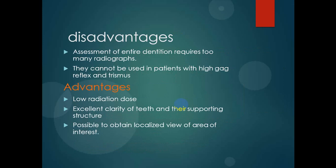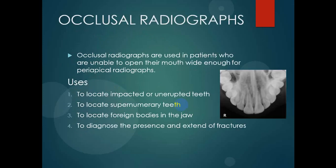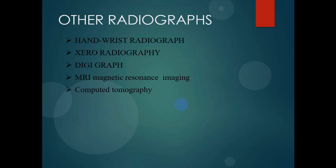Periapical radiographs cannot be used in patients with high gag reflex and trismus. Advantages include low radiation dose, excellent clarity of teeth and their supporting structures, and it is possible to obtain a localized view of the area of interest. For generalized assessment of the entire dentition, multiple periapical radiographs are needed. Other intra-oral radiographs include bitewing radiographs and occlusal radiographs. Extra-oral radiographs include panoramic radiograph and cephalometric radiograph. Other radiographs used include hand-wrist radiograph, zero radiograph, digit radiograph, MRI, and computer tomography including CBCT.